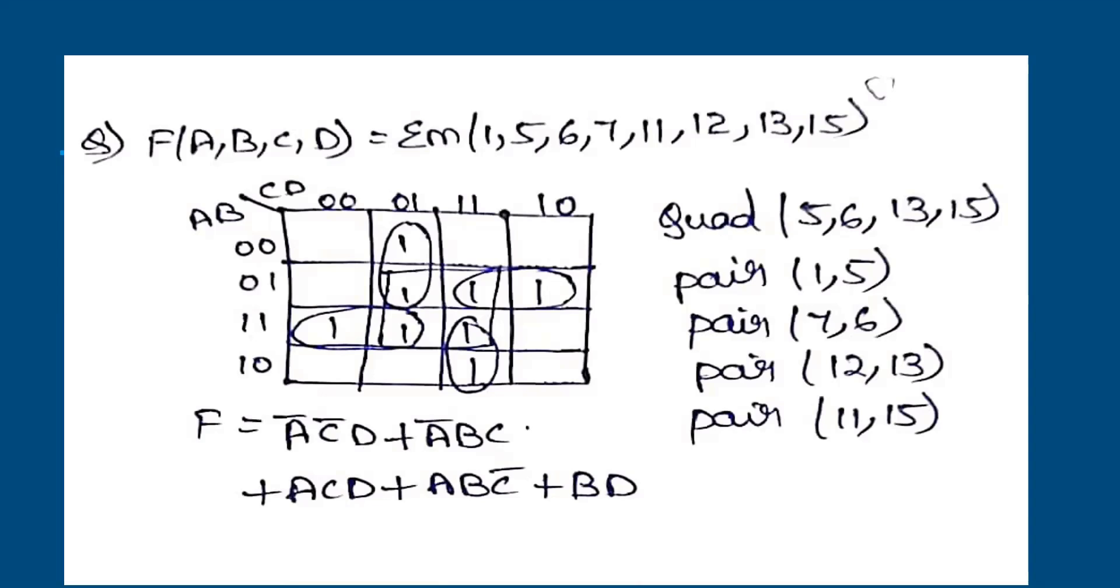Once we place it, we should look for highest possible hexa. It is not possible because all minterms are not present. Next, we should move to octet. Octet also not possible. So go for quad. Here quad can be formed by using 5, 6, 13, 15 minterms. Pair can be formed by using 1, 5. Pair can be formed by 6, 7. Pair can be formed by 12, 13. Pair can be formed by 11, 15. So group them all. We can write the easy expression.